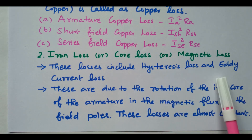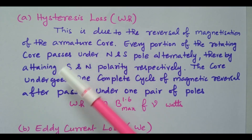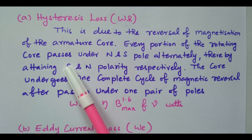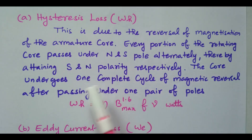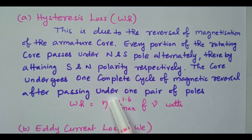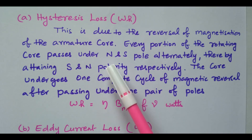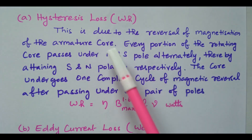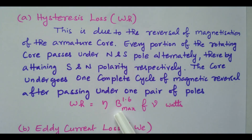Hysteresis loss is due to the reversal of magnetization of the armature core. Every portion of the rotating core passes under the N pole and S pole alternatively, thereby attaining N and S polarity respectively. The core undergoes one complete cycle of magnetic reversal after passing under one pair of poles. Due to this reversal of magnetization, losses occur — that is called hysteresis loss. It is given by: B_max^1.6 × F × V, where F is the frequency and V is the volume.